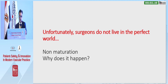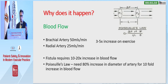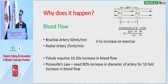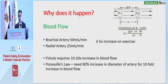Unfortunately, surgeons don't live in a perfect world, so why is non-maturation happening? Let's look at blood flow. The fistula requirement is 10 to 20 times the minimum flow of around 40 mls per minute. If we look at Poiseuille's law, an 80% increase in the diameter of the artery will result in a tenfold increase in blood flow. The artery does increase in size, but viscosity and non-laminar flow in fistulas upsets that law, so in effect you can get a much higher blood flow.